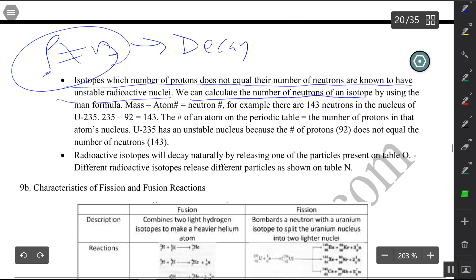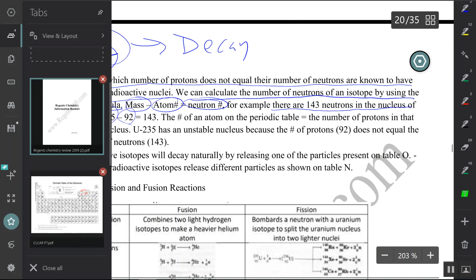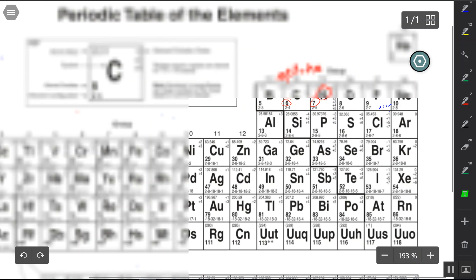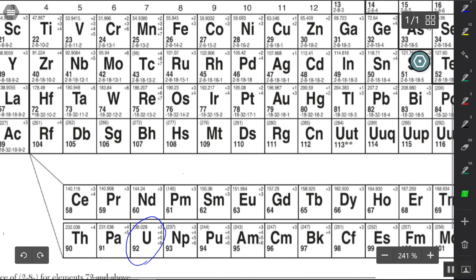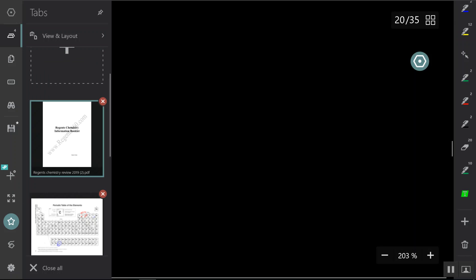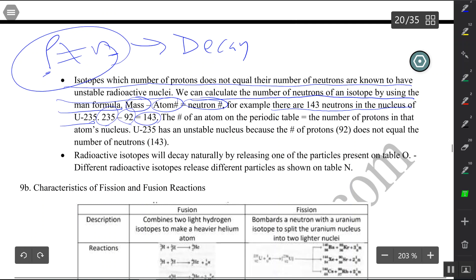We can calculate the number of neutrons of an isotope by using the Mann formula: Mass minus atom number equals neutrons. For example, there are 143 neutrons in the nucleus of a uranium-235 atom. The mass of uranium-235 is 235 minus 92, and 92 is the atom number of uranium on the periodic table. Take a look over here. Here's your periodic table. Uranium is right here all the way at the bottom as part of the actinides. It has an atom number of 92, which means it has 92 protons, and then 235 minus 92 tells you that you have 143 neutrons. So 92 protons do not equal 143 neutrons. Therefore, uranium-235 is an unstable isotope and will more likely decay.